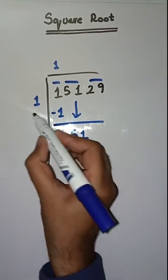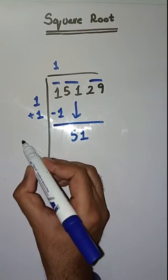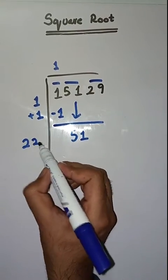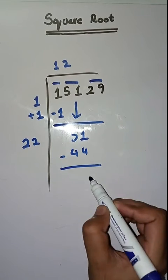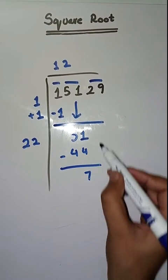Next pair is 51. Isko hum neeche lehenge. Yaha pe hum karenge 1 plus 1 which is equal to 2. Now we will take a number 2. 22 times 2 is 44. Minus karenge, 51 minus 44 is equal to 7.